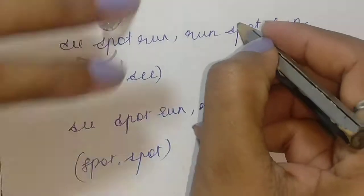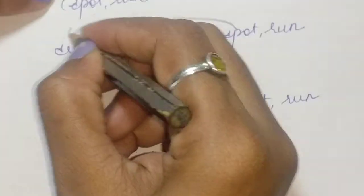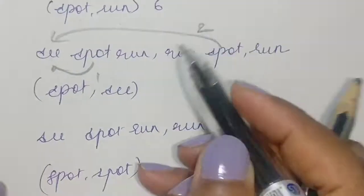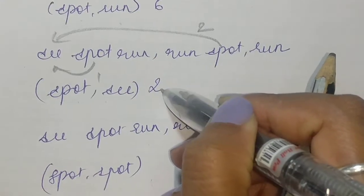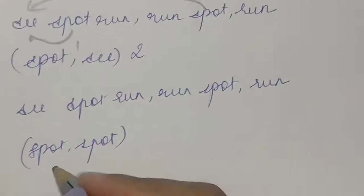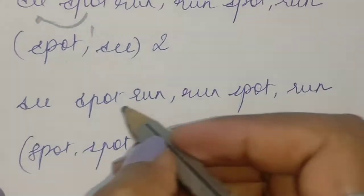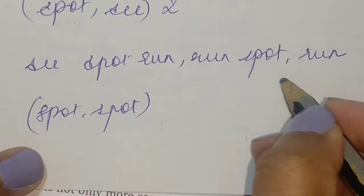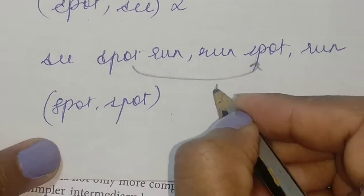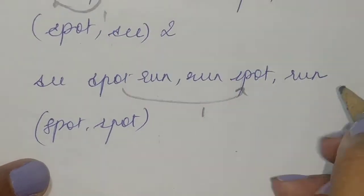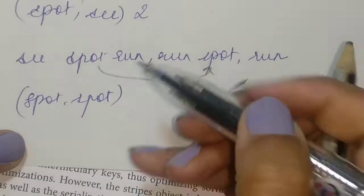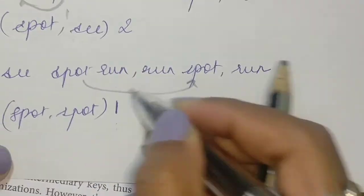Next, spot and see — since see is the only one: spot and see one, spot and see two, so the value is two. And the last one — spot and spot — the value is one.